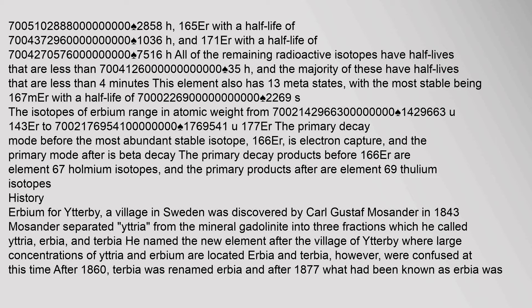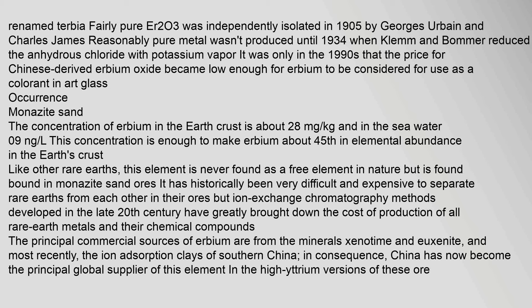Reasonably pure Er₂O₃ was independently isolated in 1905 by Georges Urbain and Charles James. Reasonably pure metal wasn't produced until 1934 when Klemm and Bommer reduced the anhydrous chloride with potassium vapor. It was only in the 1990s that the price for Chinese-derived erbium oxide became low enough for erbium to be considered for use as a colorant in art glass.